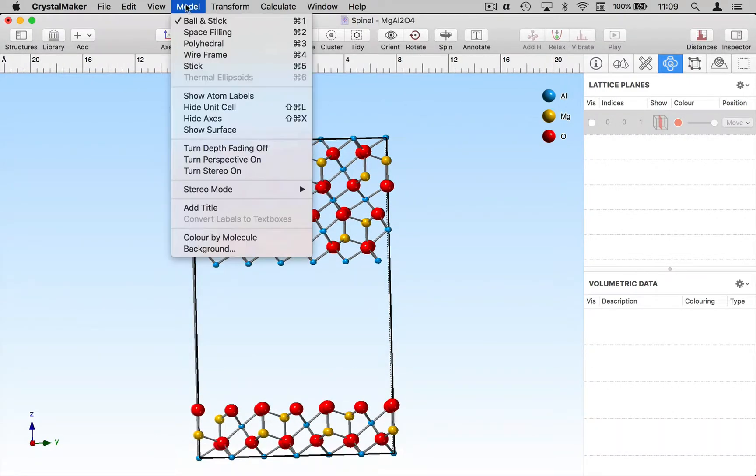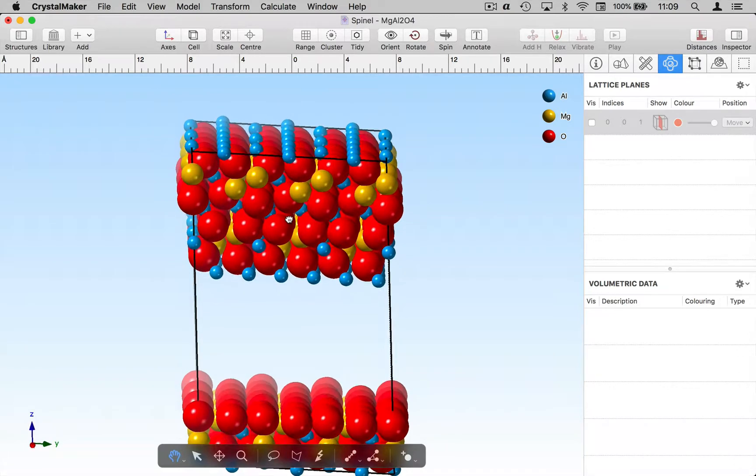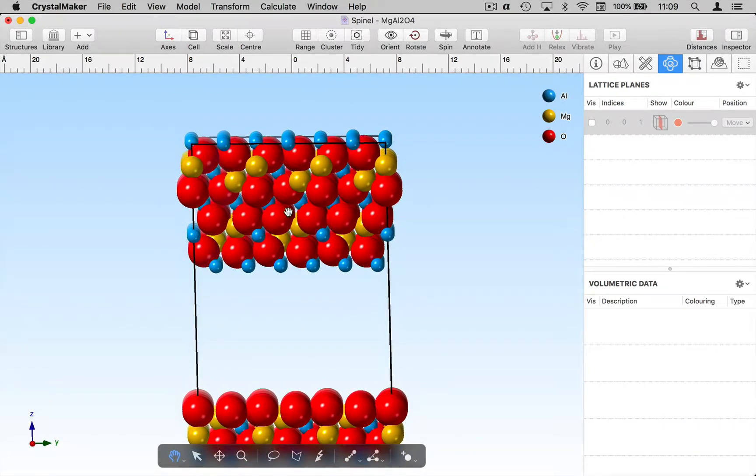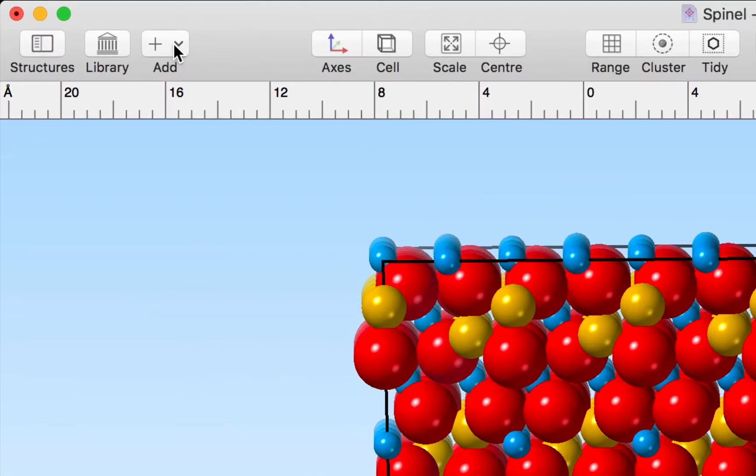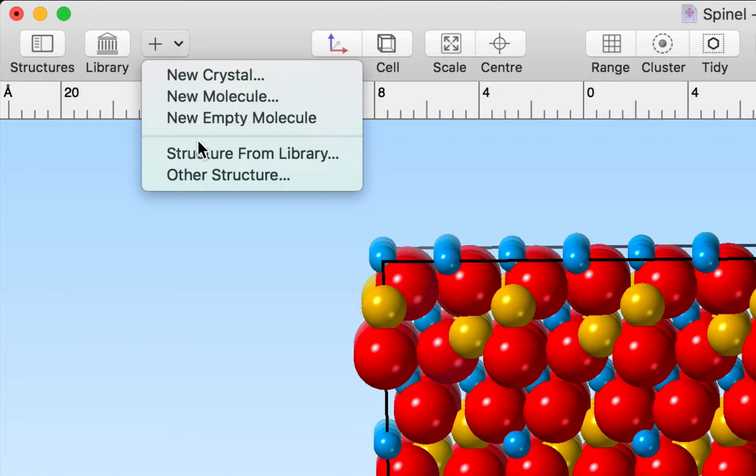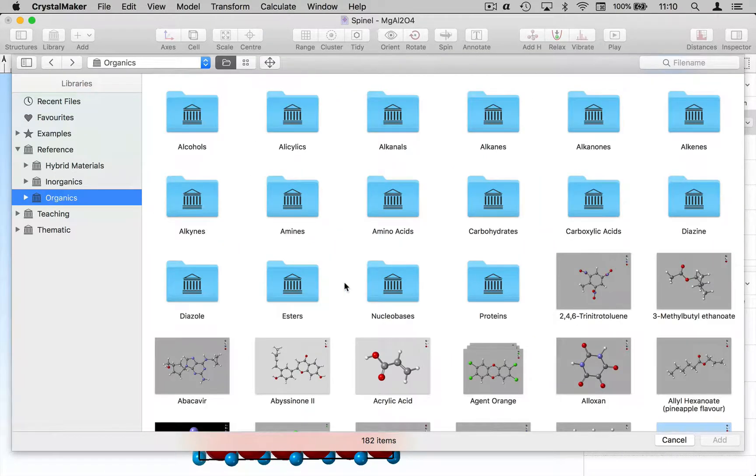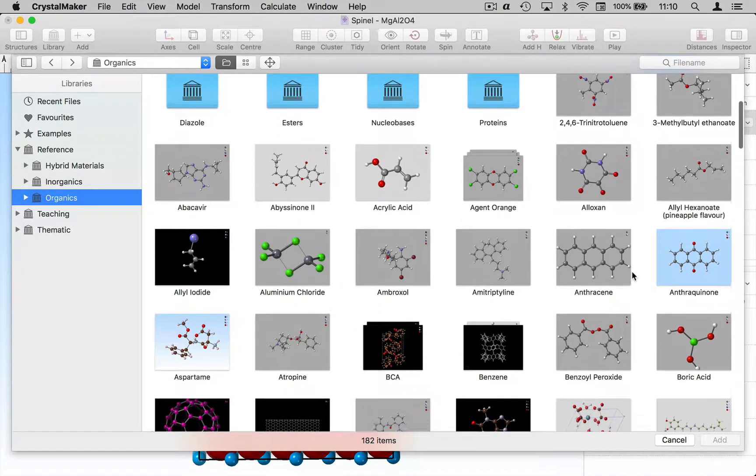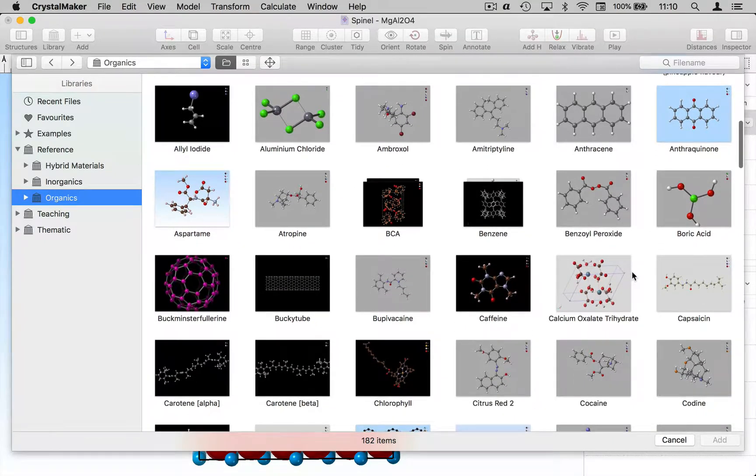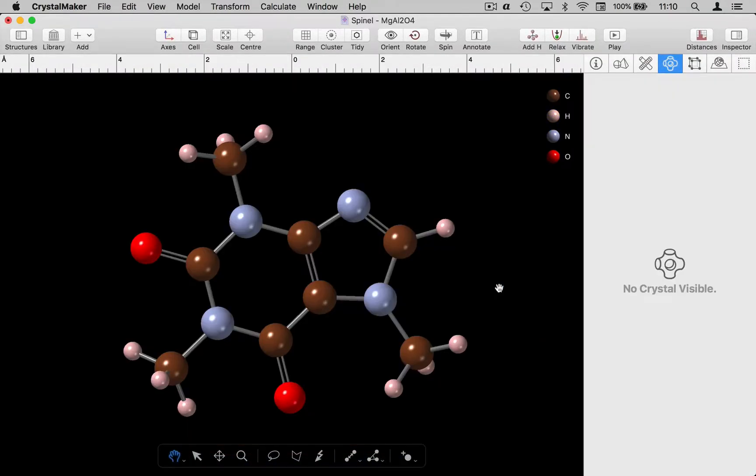If we make that a space filling model we can see we've got our close-packed planes there and I want to insert a molecule into this space. Now I can add a molecule to the current document using the add structure from library command. So let's browse through some organic structures and let's choose a molecule to put into our structure. It's that time of day where I could do with some coffee so let's add some caffeine into my structure. So let's just double click and we've got some caffeine.